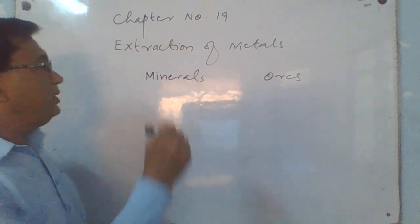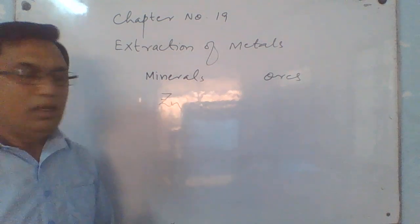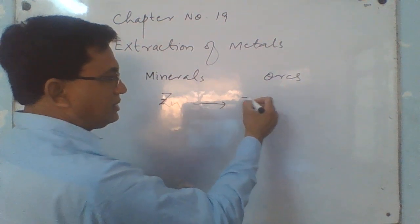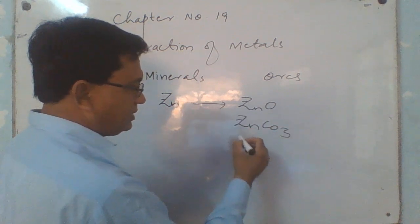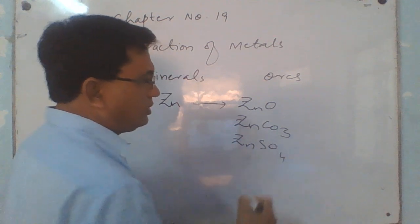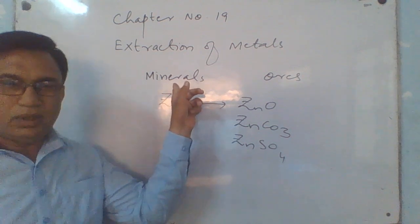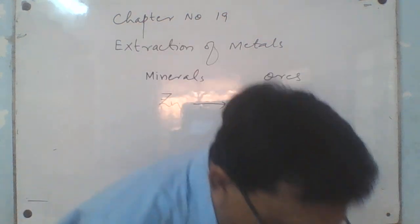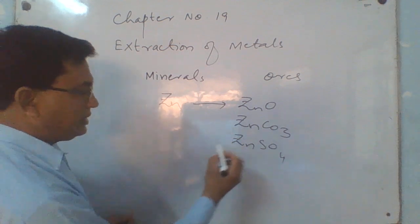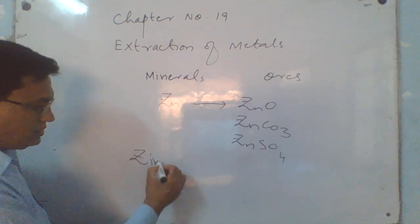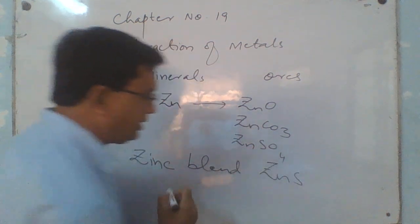For example, if we look at zinc metal, there are so many different compounds of zinc — zinc oxide, zinc carbonate, and so many more. But the most important ore from which zinc can be extracted quite easily is zinc blende, that is zinc sulfide.